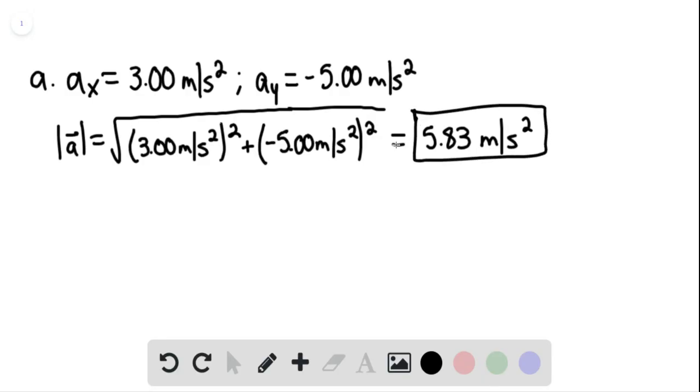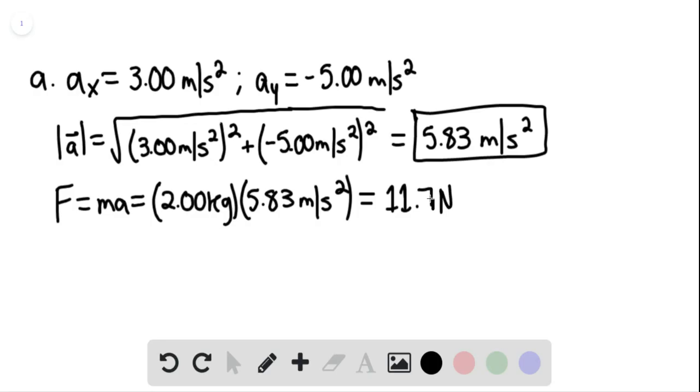Given this, we can now find the force. Force equals mass times acceleration, so this equals 2.00 kilograms multiplied by 5.83 meters per second squared, giving us 11.7 newtons. This is our final answer for part A.